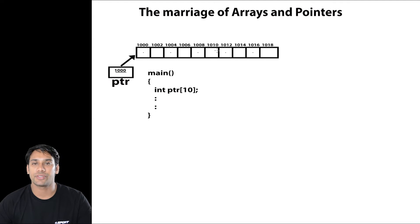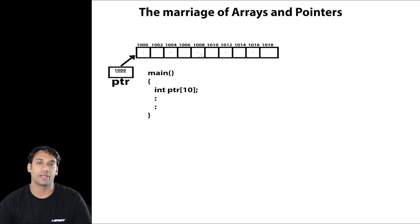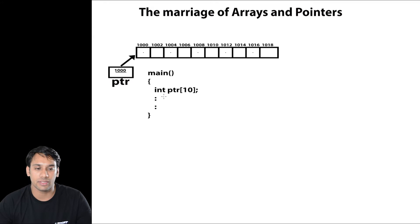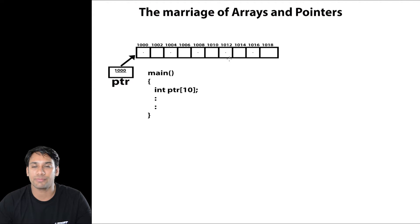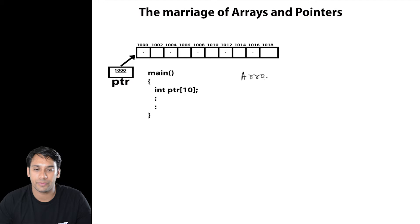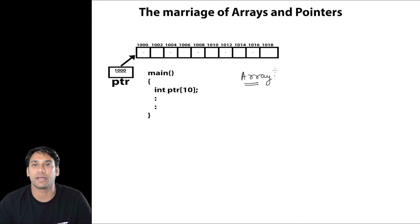The next topic is arrays — the relation between arrays and pointers. As you can see, arrays and pointers are very closely interrelated to each other. If I declare an array like int ptr[10], it means we are having 10 continuous memory locations. So let us define what an array is initially. In an array we get continuous memory allocation of similar data type.